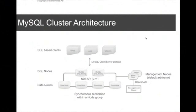Looking at the components that comprise the cluster: at the bottom you have the data nodes, and that's where you actually store the data. The data is automatically partitioned across the data nodes transparently from the application developer's point of view. MySQL Cluster takes the primary key, creates a hash value of it, and uses that to distribute rows as evenly as possible across the data nodes. By default, you have two copies of everything, so a row inserted in MySQL Cluster will also have a copy on another data node.